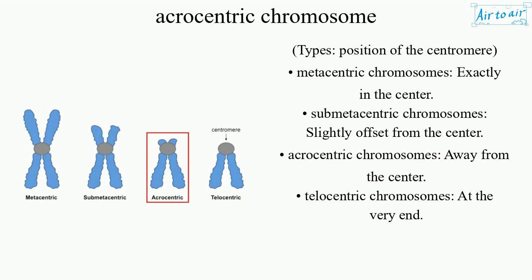Types based on position of the centromere: Metacentric chromosomes — exactly in the center; Submetacentric chromosomes — slightly offset from the center; Acrocentric chromosomes — away from the center; Telecentric chromosomes — at the very end.